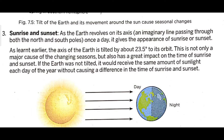As the earth revolves on its axis once a day, it gives the appearance of sunrise and sunset. This is not only a major cause of changing seasons, but also has a greater impact on the timing of sunrise and sunset.